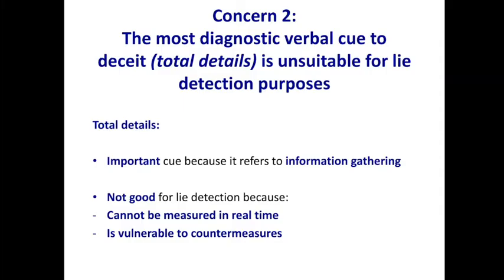Why not? For two reasons. It cannot be measured in real life time — typically you either transcribe an interview and count the number of details, or do that automatically via software, but that's not happening in real life interviews where an interviewer has to count details in real time. The second reason is even more important: it is so vulnerable to countermeasures. If a suspect gets to know that all they need to do is give information to sound convincing, that makes it extremely vulnerable. Somebody who favors total details might say the interviewer will listen to the type of details, but that is no longer the total details variable.